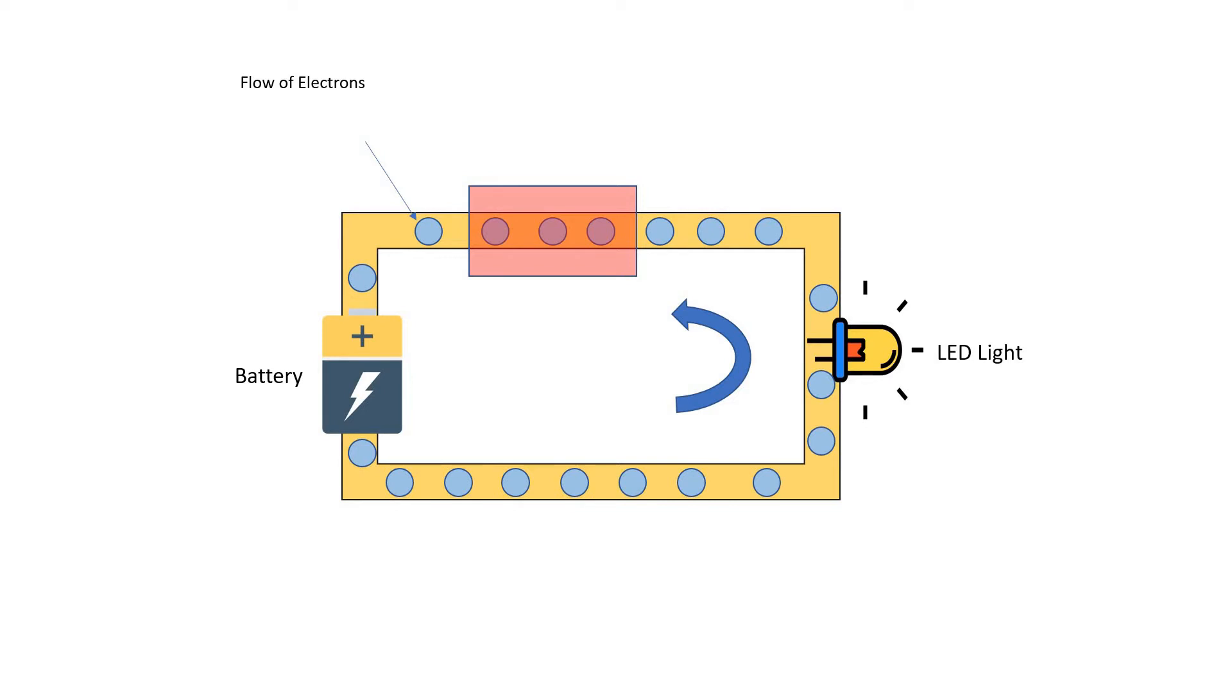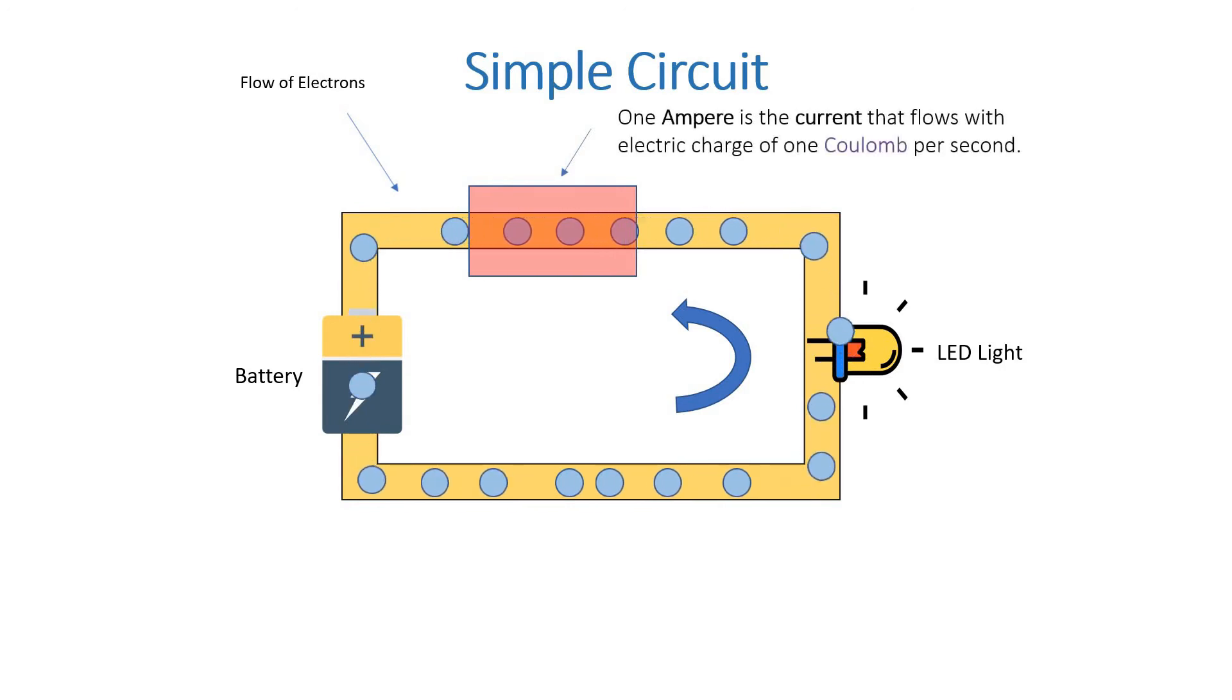Okay, now when we give voltage across the copper wire the electrons get energized and the electrons move. We all know that electrons are negatively charged, however these electrons try to attract the positive terminal of battery.